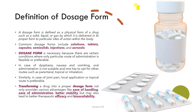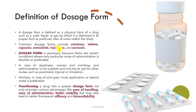A dosage form is defined as a physical form of a drug — such as solid, liquid, or gas — by which it is delivered in its proper form to particular sites of action within the body. Common dosage forms include solutions, tablets, capsules, semi-solids, injectables, and aerosols.